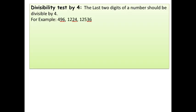Now, let us see divisibility test by 4. The last two digits of a number should be divisible by 4. For example, 496. Here, we will see that 96 is divisible by 4 or not. 4 2's are 8, minus 1, 6. 4 4's are 16. So, 96 is divisible by 4.